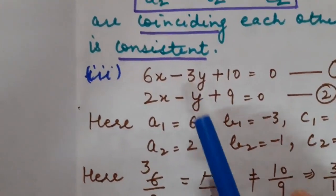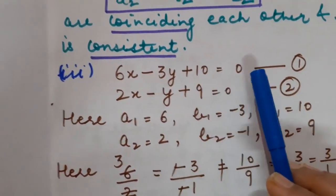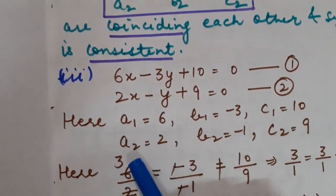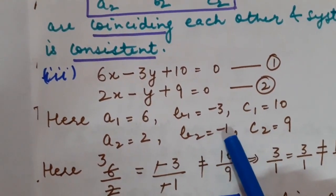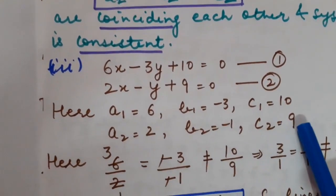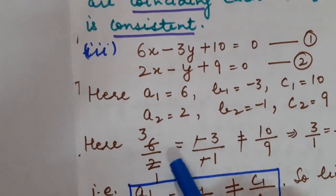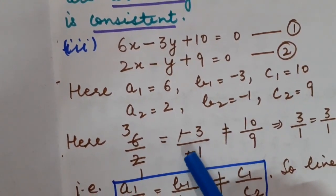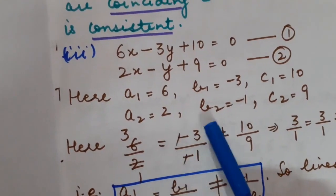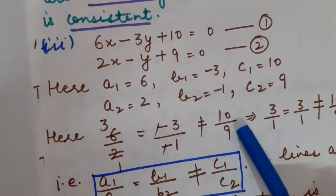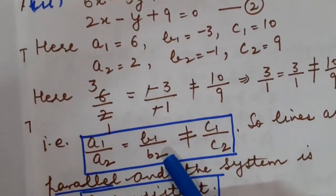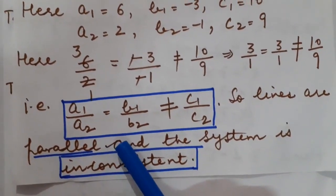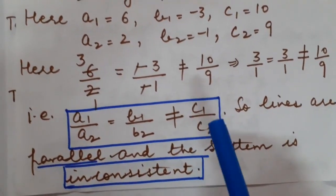Third part: 6x − 3y + 10 = 0 and 2x − y + 9 = 0. Comparing: a1 = 6, a2 = 2, b1 = −3, b2 = −1, c1 = 10, c2 = 9. Here 6/2 = 3/1 and −3/−1 = 3/1, so a1/a2 = b1/b2 = 3/1. But 10/9 ≠ 3/1, so a1/a2 = b1/b2 but not equal to c1/c2. The lines are parallel, no solution exists, and the system is inconsistent.